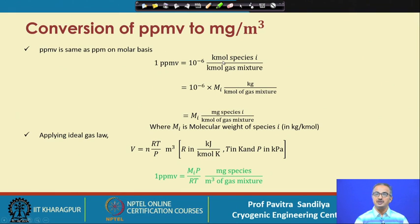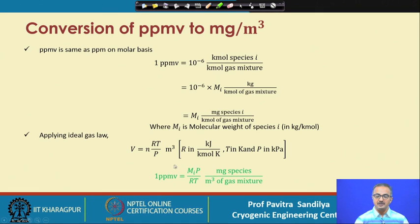To convert kilomoles into mass, we multiply by the molecular weight. We now get m_i in milligrams — kg times 10 to the power minus 6 gives us 1 milligram — so milligrams of species i per kilomole of the gas mixture. Using the ideal gas law, V = nRT/P, with temperature in Kelvin, pressure in kiloPascals, and the universal gas constant in kilojoules per kilomole per Kelvin, we get that 1 PPMV equals molecular weight times pressure divided by R times T, in milligrams of species per cubic meter of the gas mixture.